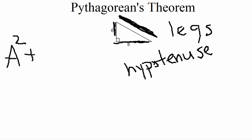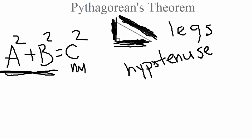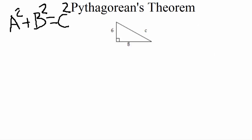The Pythagorean theorem states: a squared plus b squared equals c squared. In this formula, a and b are the legs of the triangle — the sides. It doesn't matter which side is a and which is b; just pick one. C is always the hypotenuse — that will never change. So c squared is always your slanted side, and a and b are always the legs.